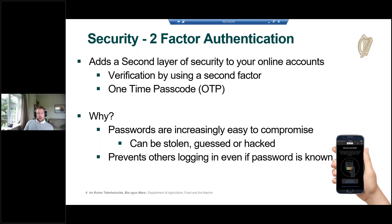Two-factor authentication adds a second layer of security to your online accounts, where you are verified by a second factor. For us, we're using a one-time passcode. Every time you log in to the AgriSnap app, you will be provided with a six-digit passcode by the Duo app, which you enter on your final login screen to activate the app. Passwords as we know them are easily compromised — they can be stolen, guessed, or hacked. So this is an extra step: unless someone has your mobile phone and that six-digit passcode, they cannot log in to our systems.